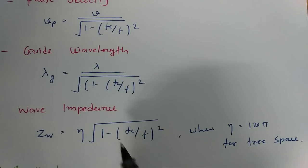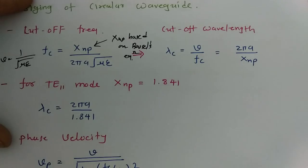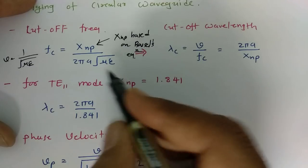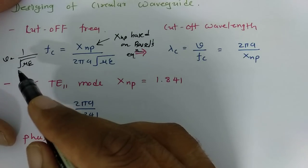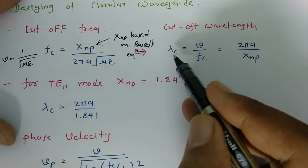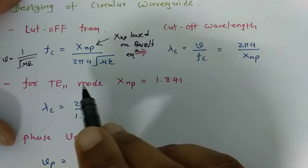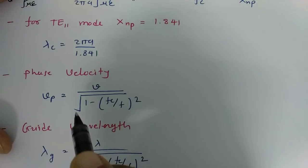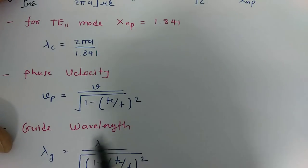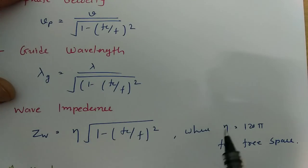To summarize the design formulas: cutoff frequency Fc = XNP / (2πA√(με)), where velocity = 1/√(με), μ = μ₀μᵣ, and ε = ε₀εᵣ. Cutoff wavelength = 2πA / XNP. For TE11 mode, XNP = 1.841. Phase velocity = velocity / √(1 − (Fc/F)²). Guided wavelength λG = λ / √(1 − (Fc/F)²). Wave impedance = η × √(1 − (Fc/F)²), where η = 120π for free space.